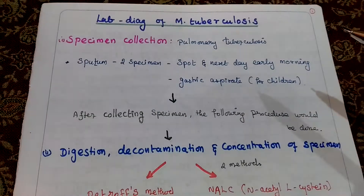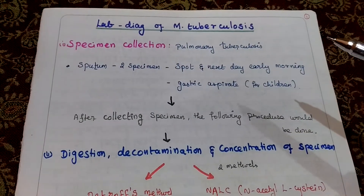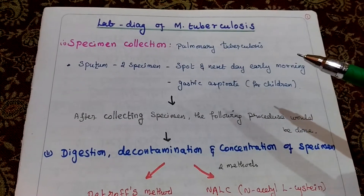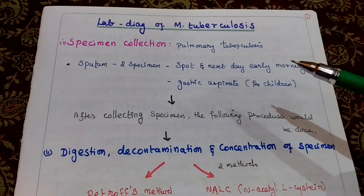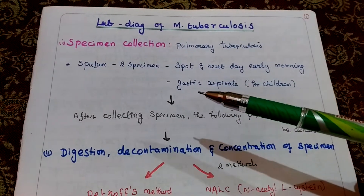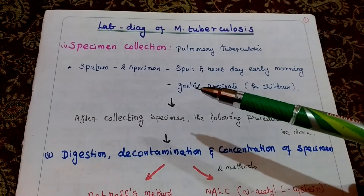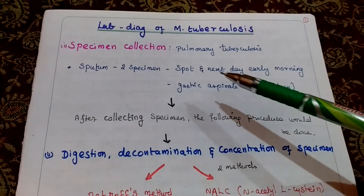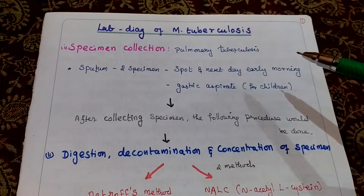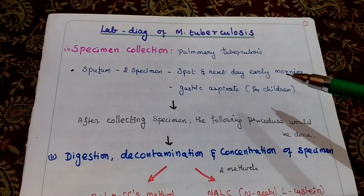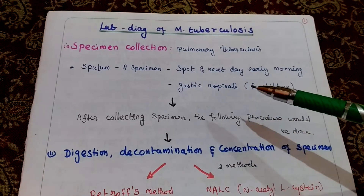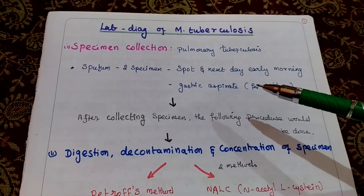Laboratory diagnosis of Mycobacterium tuberculosis — specimen collection. Here we will collect the sputum sample: two specimens, spot and next day early morning. In the case of children, we will collect gastric aspirate.